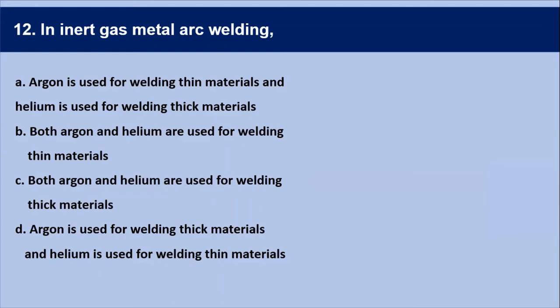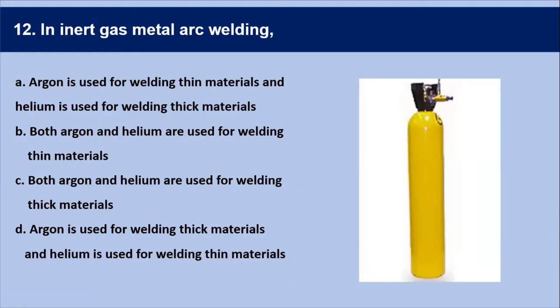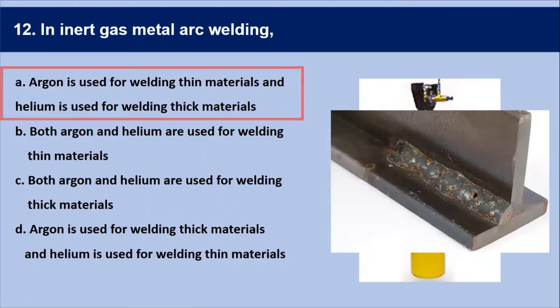Next question: in inert gas metal arc welding, which gas is used for which application? Helium gas is lighter than air and requires large flow rates; it does not react with molten metal and is used for aluminum and other ferrous metals, especially for thicker metal. Argon is used for welding thin material and helium is used for welding thick metal. The answer is A.